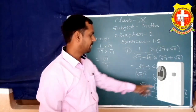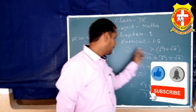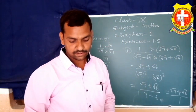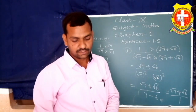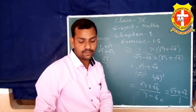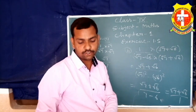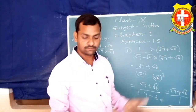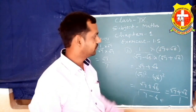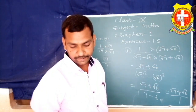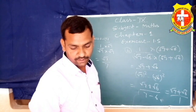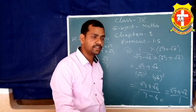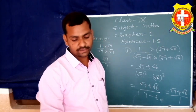Question number 3 के अगले भाग में: 1/(√5 + √2) का परिमेयकरण करेंगे — plus या minus चिह्न बदलकर गुणा करेंगे। इसी तरह 1/(√7 − 2) का भी परिमेयकरण करेंगे — minus को plus में बदलकर multiply करेंगे।